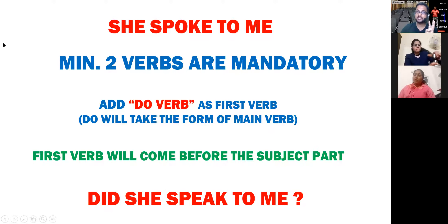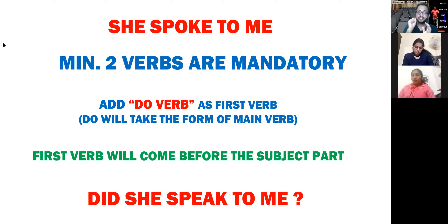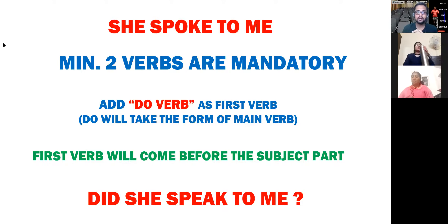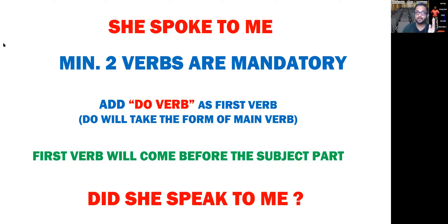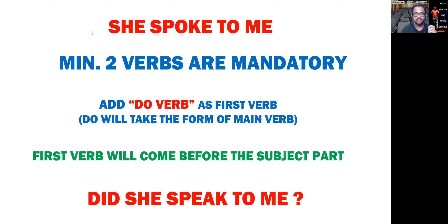So हमने तीन चीज़ें किया: एक — extra verb लाके उसको use किया। दूसरा — एक sign of interrogation, a question mark, last में दिया। And third — हमारा जो tone है, बोलने की जो tonality है, वो भी question जैसी होगी। 'Did she speak to me?' — ऐसे कोई question नहीं बोलता। जब भी आप question करोगे, आपको अपना tone change करना पड़ेगा। 'Did she speak to me?' — this is the way we speak interrogative sentences.